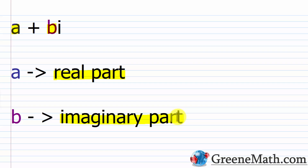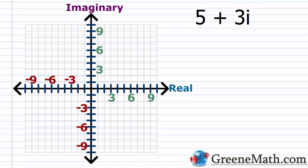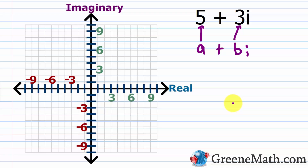How can we plot a complex number such as a plus bi on the complex plane? The complex plane looks just like the coordinate plane we're used to working with for real numbers. The difference is that instead of the horizontal axis being labeled x, it now says 'real,' and instead of the vertical axis being labeled y, it now says 'imaginary.'